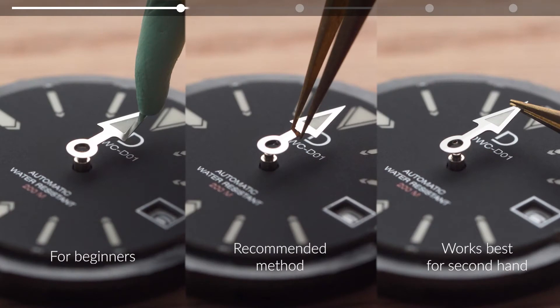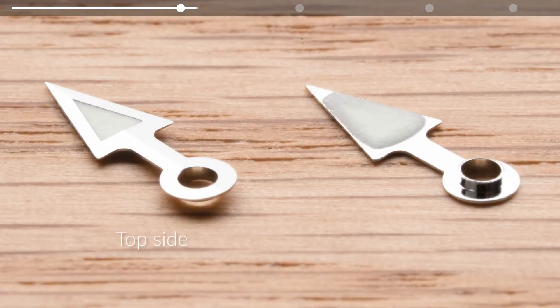There are multiple ways to pick up a watch hand. You can pick it up using a pair of tweezers or a rodico. The top side of the watch hand has a more refined finish. The bottom side is less finished and has a protruding tube.